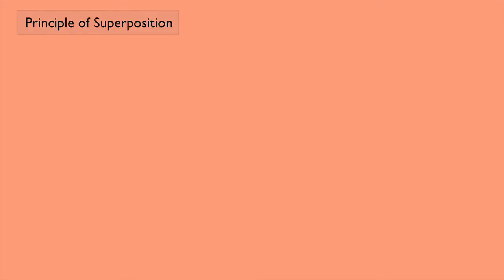So you know how to find the gravitational force of attraction between two masses. Suppose we have a mass M and then we have another mass, little m1. We know that the force that the big M feels due to little m1 is attractive — I'll call that one F1. But what if I have more than one mass? What if there's also a mass 2, with a force F2, and a mass 3, with a force F3? Then what do you do?